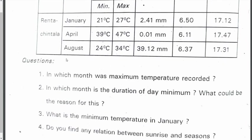Observe the following table and answer the questions. In which month was maximum temperature recorded? Maximum temperature is recorded in April — 39.47 degrees. In which month is the duration of day minimum? Duration of day is minimum in January, from 6:50 to 7:12, which is very short. The reason is it is a winter month. The minimum temperature in January is 21 degrees centigrade. Do you find any relation between sunrise and season? Yes — in winter, sunrise is very late, whereas in summer, the sun rises very early.